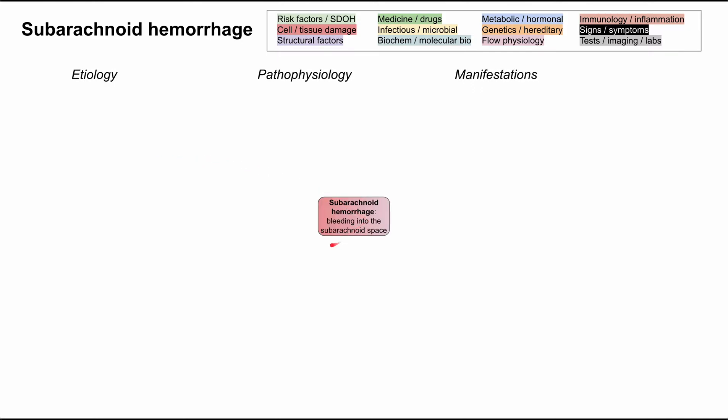The definition is that you have bleeding into the subarachnoid space, and this usually happens when you have rupture of some type of structural problem. Usually it's an aneurysm or an arteriovenous malformation. Intracranial aneurysms are usually berry aneurysms, and that makes up 80% of non-traumatic subarachnoid hemorrhages. They're usually in the circle of Willis, especially in the anterior circulation.